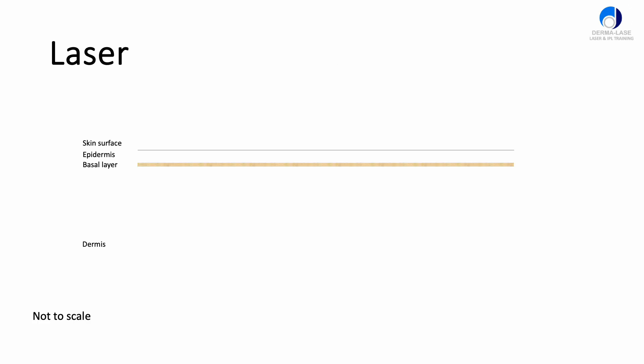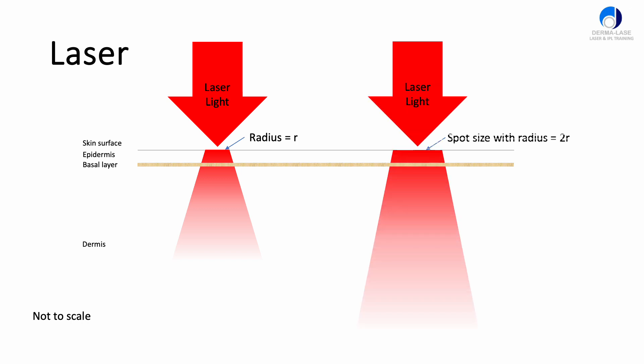We fire a laser pulse, it doesn't matter if it's laser or IPL, at the skin surface, and that pulse hits the skin surface with a radius, we'll just assume it's circular, with a radius of R. Then we fire another pulse just next to it, only this radius is now twice the radius of the first pulse. But it's the same fluence.